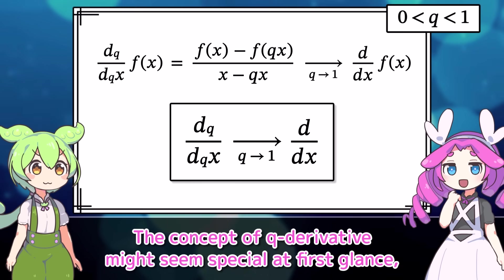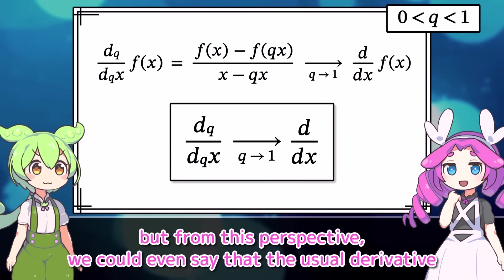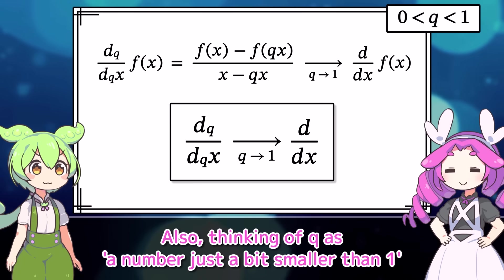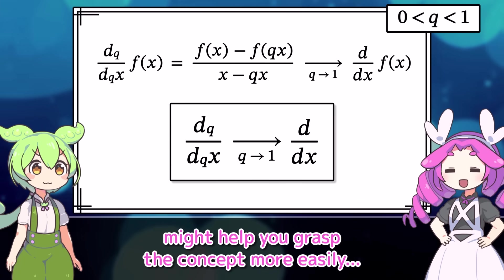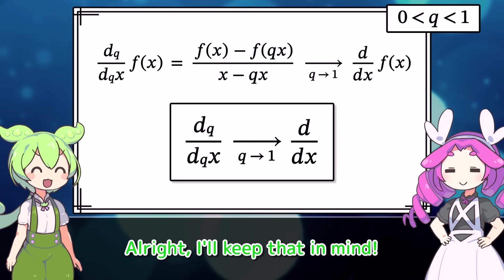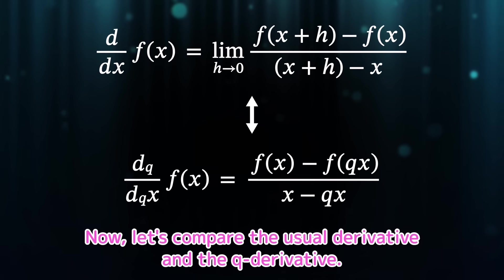The concept of q-derivative might seem special at first glance. But from this perspective, we could even say that the usual derivative is just a special case when q approaches 1. Also, thinking of q as a number just a bit smaller than 1 might help you grasp the concept more easily. Well, that's just an intuition, though. Alright, I'll keep that in mind.